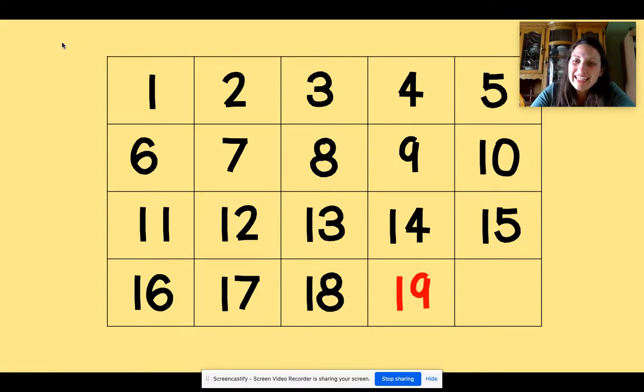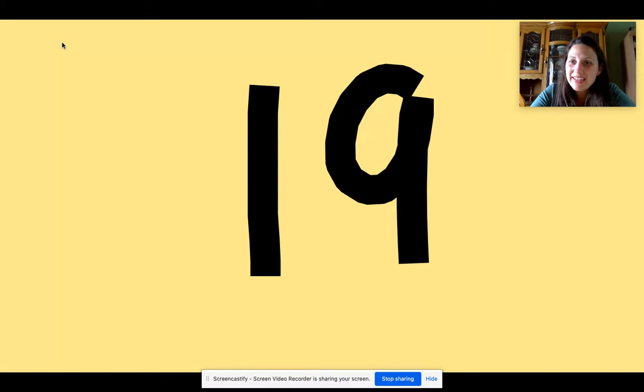Our number of the day is 19 and look our grid is almost full. We have learned so many numbers. Here's what the number 19 looks like. It's a one and a nine. When we make the one, we start at the top and we go straight down. When we make the nine, we start at the top. We make a circle around and then back straight down.